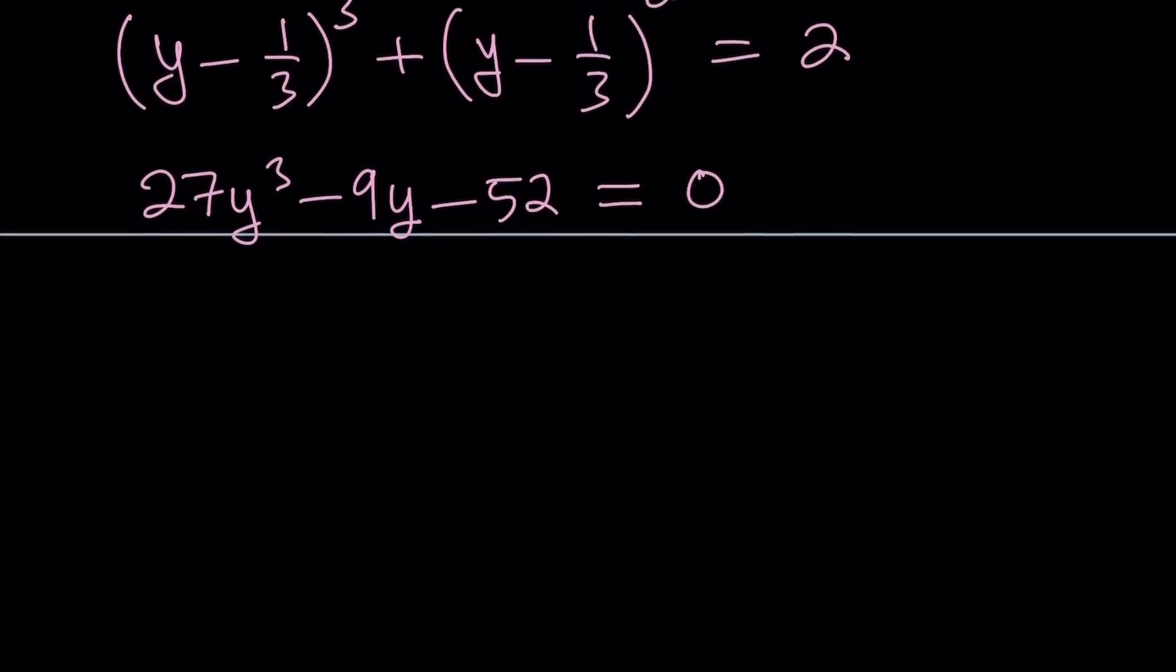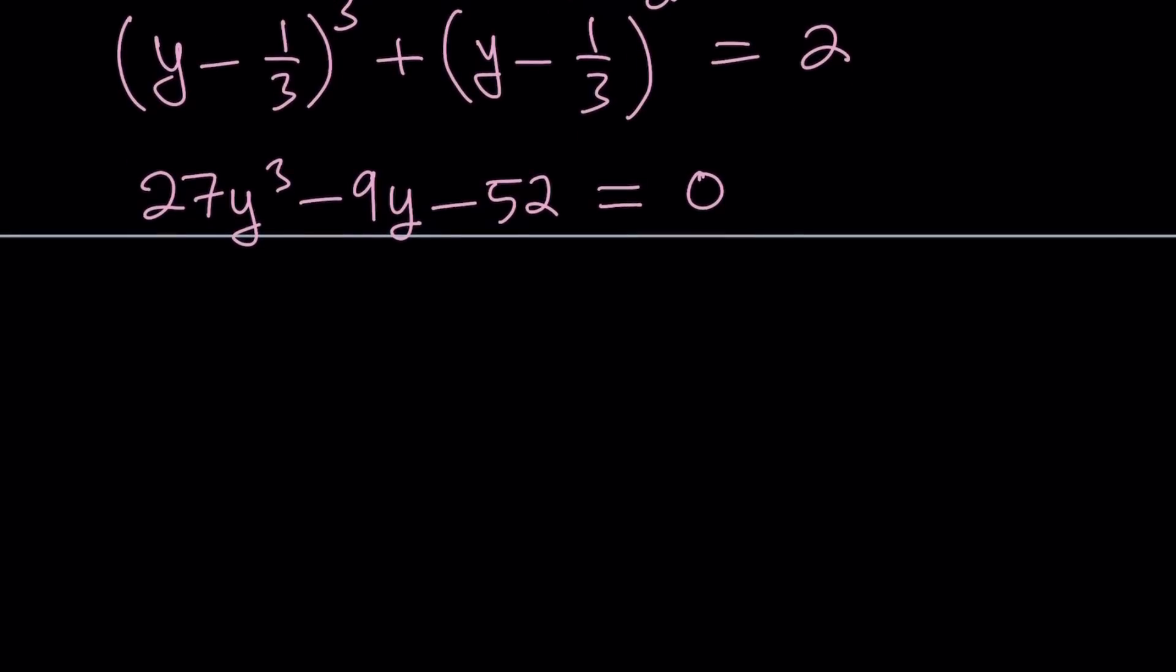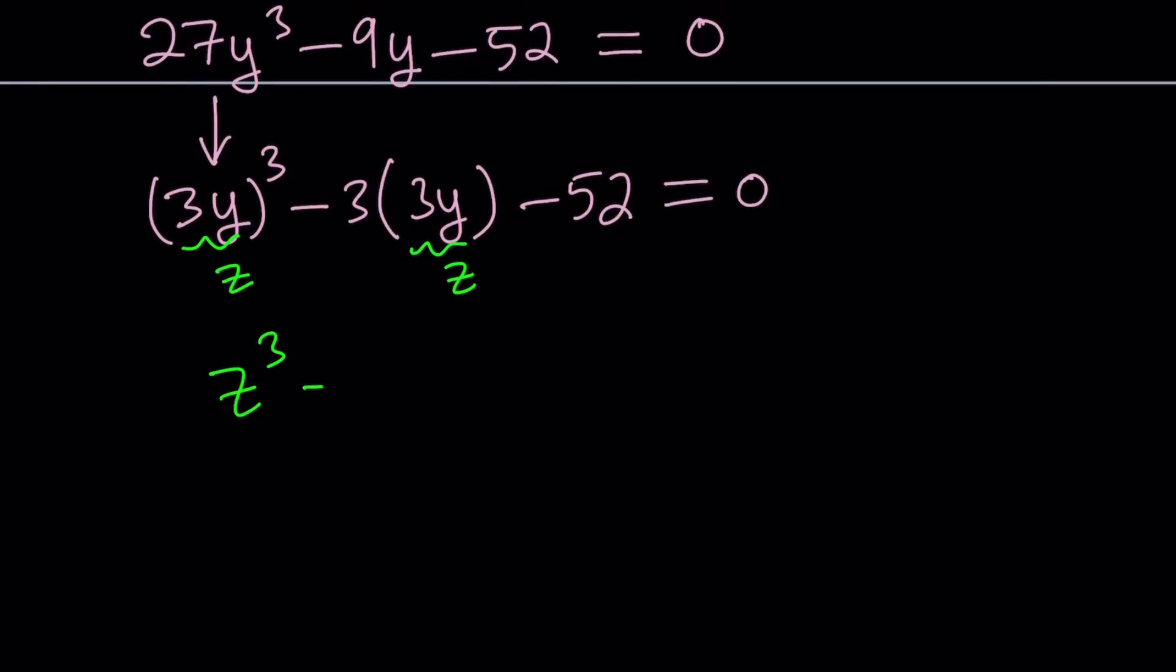So let's go ahead and solve this using the cubic formula. But before that, we have to do more substitution. 27y cubed can be written as 3y to the third power minus 3 times 3y minus 52. I'm going to replace 3y with something, how about z? Z is a nice variable. So we get something simpler, a monic polynomial: z cubed minus 3z minus 52 equals zero. So that was the goal. We wanted to get a monic polynomial that doesn't have a quadratic term. In other words, we don't have any z squared or y squared.